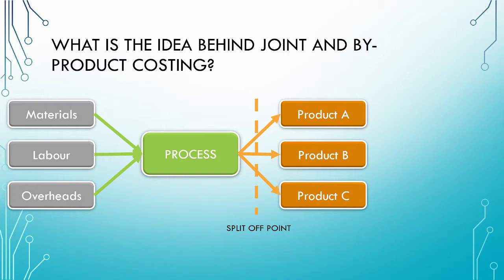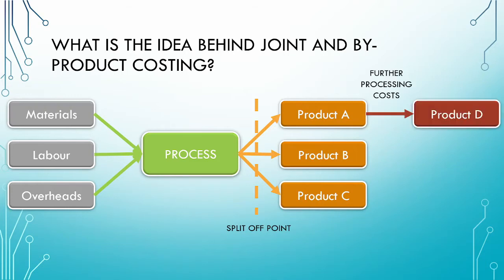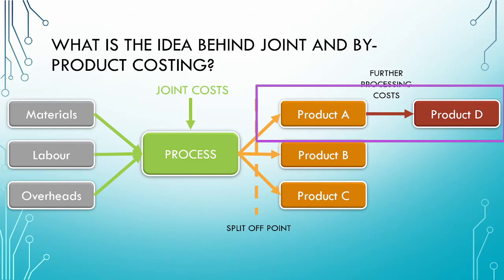These are the four methods we have looked at in our previous videos. After the split-off point, where the products are separately identifiable, the products may be subject to further processing. These further processing costs can be traced to the individual products to which they relate. The further processing decision, which we will be focusing on in this video, takes place after the split-off point as highlighted on screen.